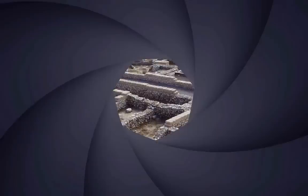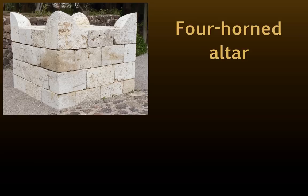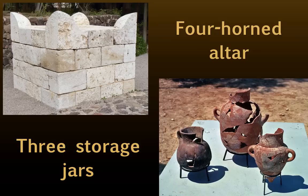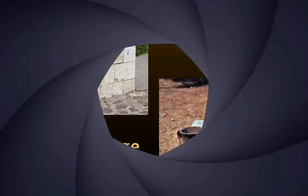A four-horned altar discovered at the site. Notice that the stones are shaped contrary to the Law of Moses. The sherds of three storage jars were discovered in nearby storehouses. Here, the reconstructed vessels are on display.